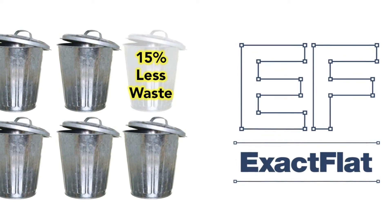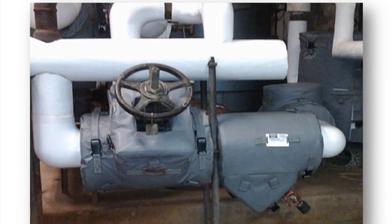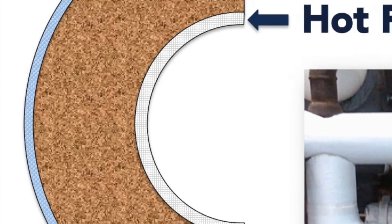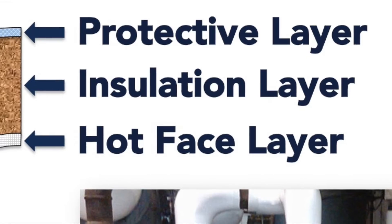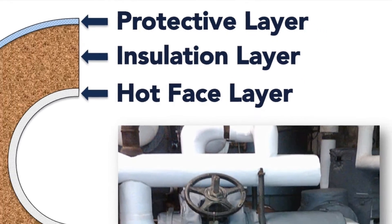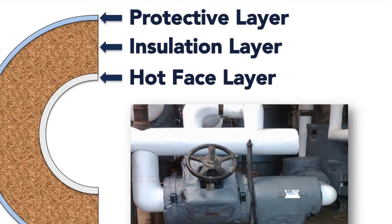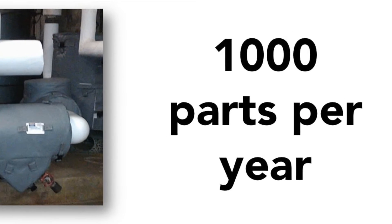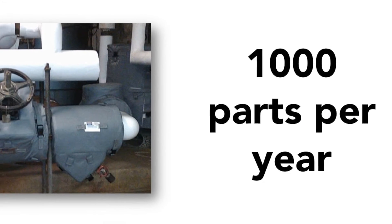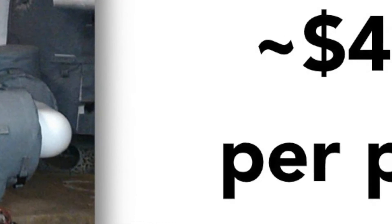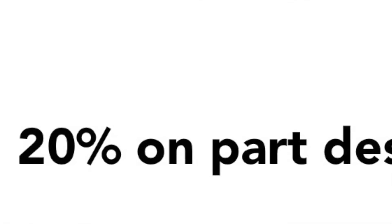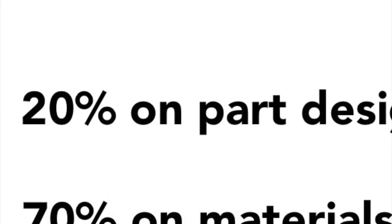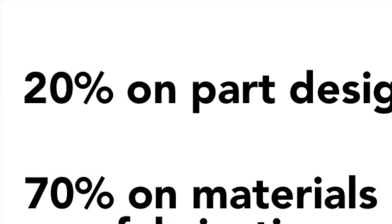In this example, consider a typical valve cover. The design calls for three layers: the protective outer layer, the insulation layer, and the hot face or inner layer. Let's assume a yearly production of 1,000 parts, a part cost of about $450, and let's also assume part design is approximately 20% of the cost.